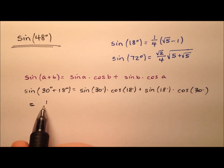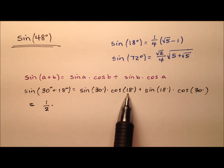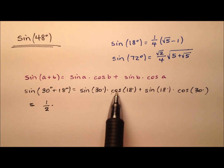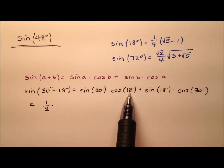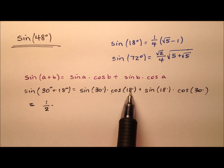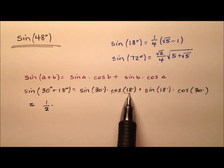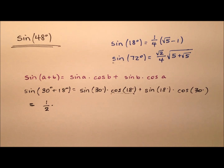So the sine of 30 degrees is 1/2, and then our cosine of 18 degrees — sine and cosine have a nice relationship where the cosine of an angle, say 18 degrees, is the same as the sine of its complement. Complementary angles add up to 90 degrees, so 72 plus 18 gives 90. So the cosine of 18 and the sine of 72 are the exact same value.